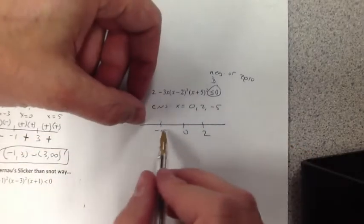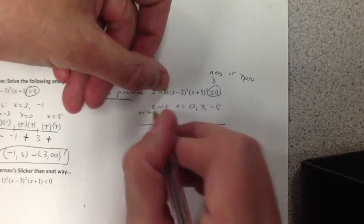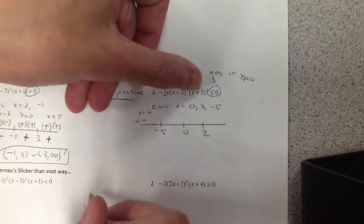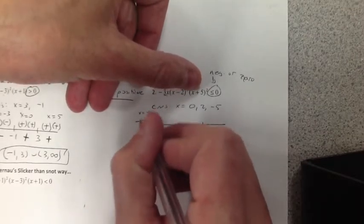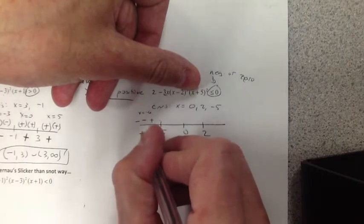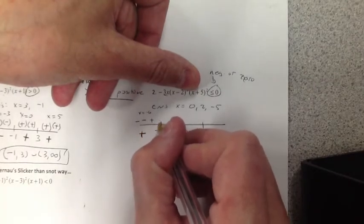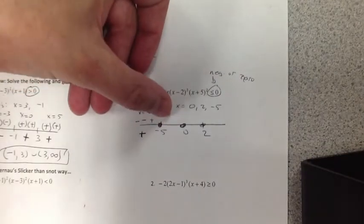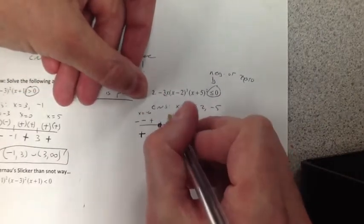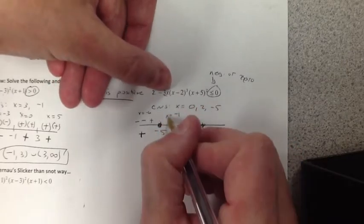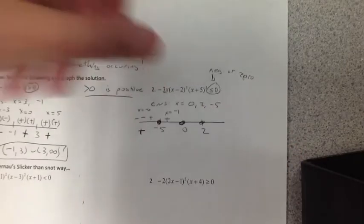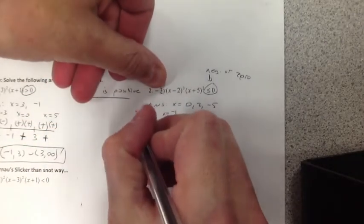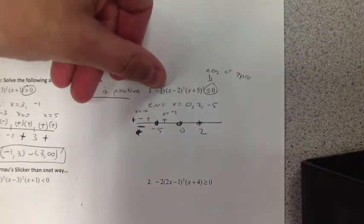So we want the negatives or 0. So if I go negative 5, 0, 2, please put them in order. If I check before negative 5, like negative 6, looking at all the factors, that's negative. Negative, that's being cubed, negative squared, positive. So 2 negative and a positive make a positive. And because I can include it this time, I should also circle those in. If I pick something between negative 5 and 0, like negative 1, 2 negatives make a positive. I made a mistake. Hopefully somebody caught that. If I plug a negative 6 here, that should be positive, which will make this a negative. I'm so sorry about that.